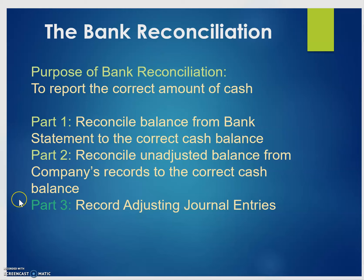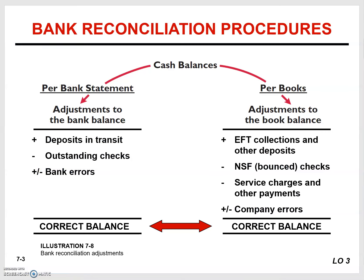Part three is to record any adjusting journal entries. Visually, we can see that the bank reconciliation procedures can be split up into these different parts. The first part is to start off with the company's bank statement. The company receives a bank statement from their financial institution that has the balance as of the closing time of the bank on the last day of the month — for example, if a bank closed on July 31st at 6 o'clock p.m.